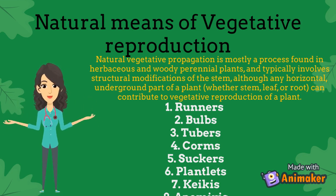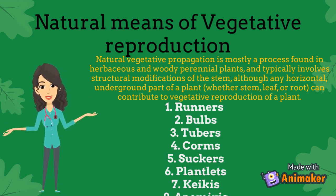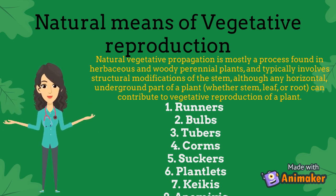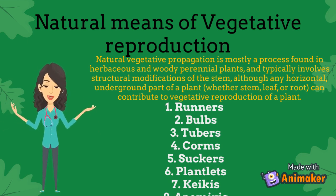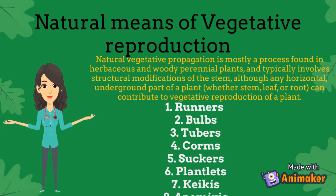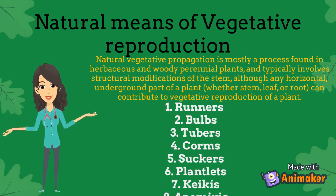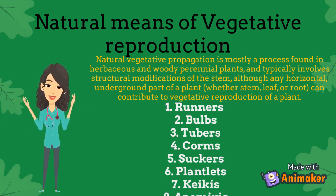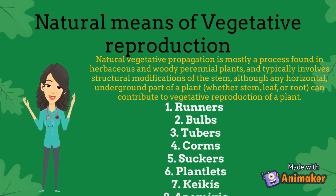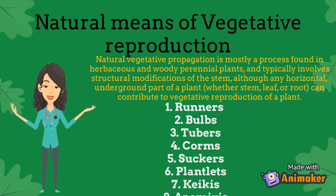Corms are solid enlarged underground stems that store nutrients in their fleshy and solid stem tissue, and are surrounded by papery leaves. Corms differ from bulbs in that their centers consist of solid tissue, while bulbs consist of layered leaves.